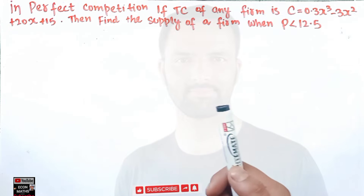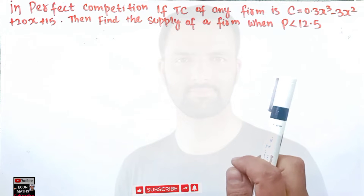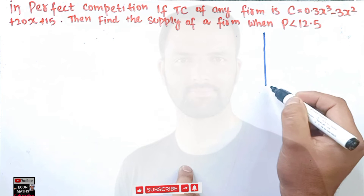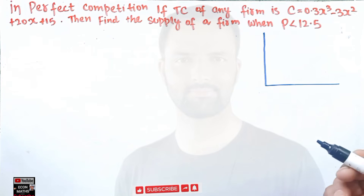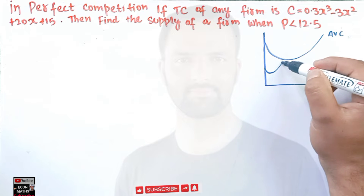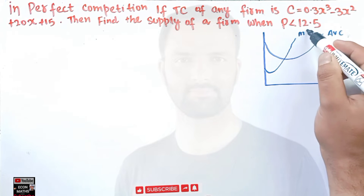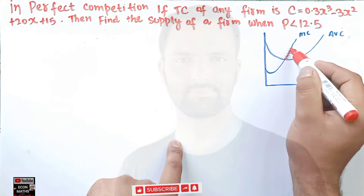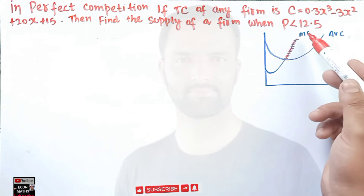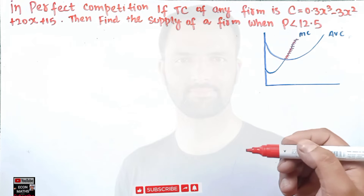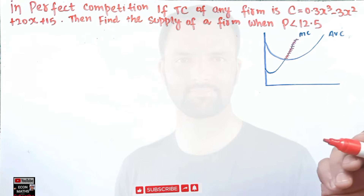In a perfectly competitive market, a firm must supply where its marginal cost is above the minimum of its average variable cost. If we draw a graph, we have the average variable cost curve (AVC) and the marginal cost curve (MC). The supply curve is the part of the marginal cost curve which lies above the average variable cost.